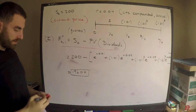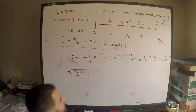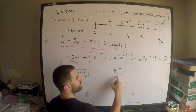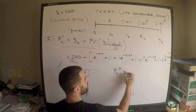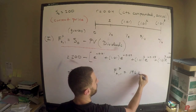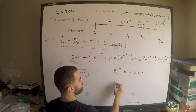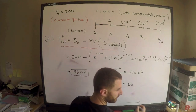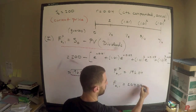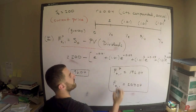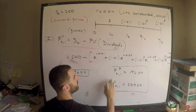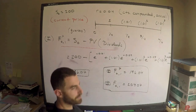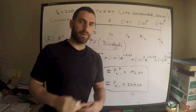In conclusion: the prepaid forward price on this stock is 196.04, and the one-year forward price is 204.04. This answers both parts of the question. I hope it was helpful.